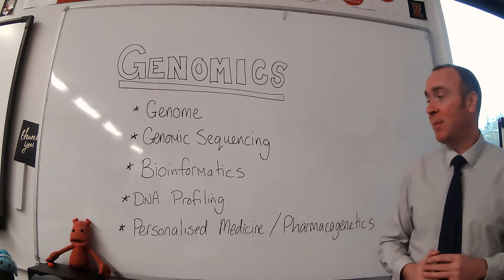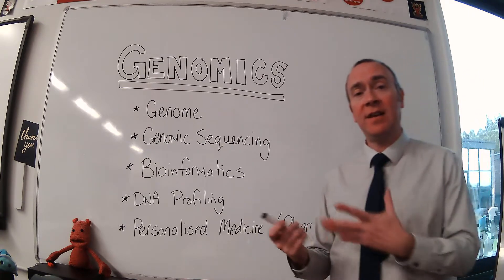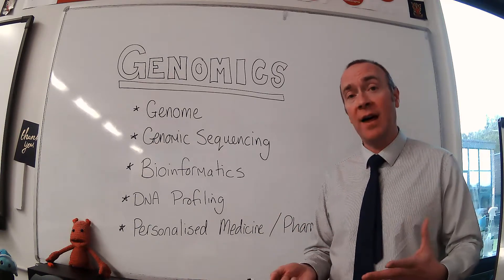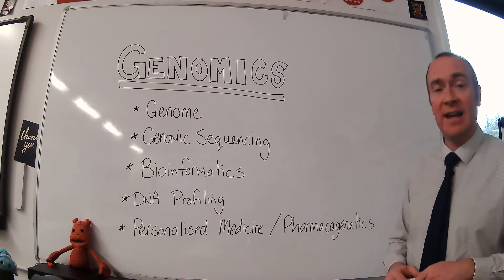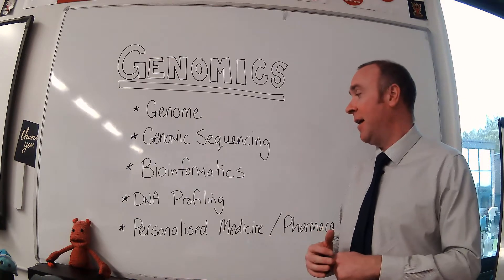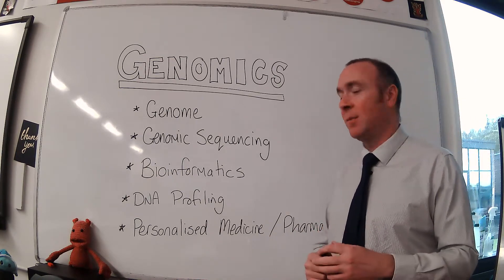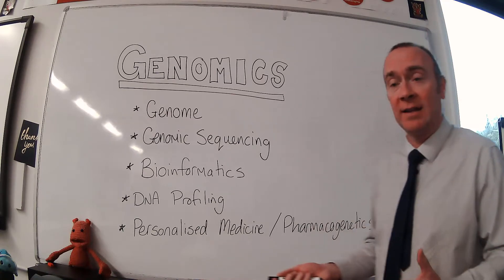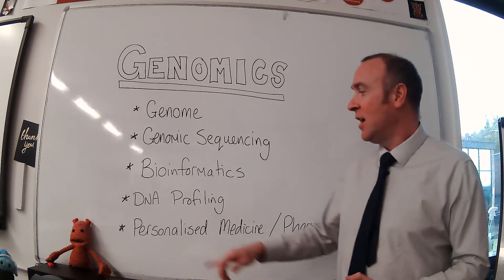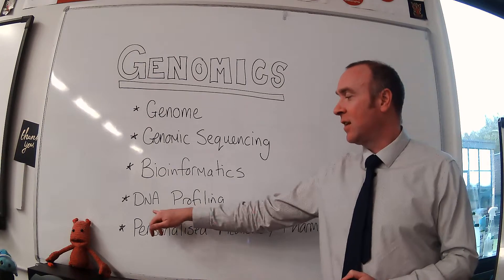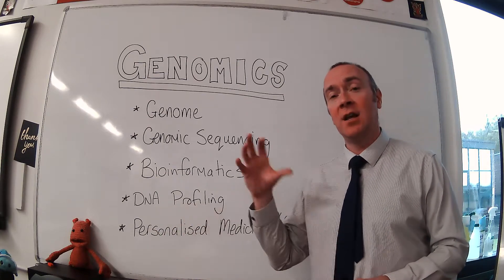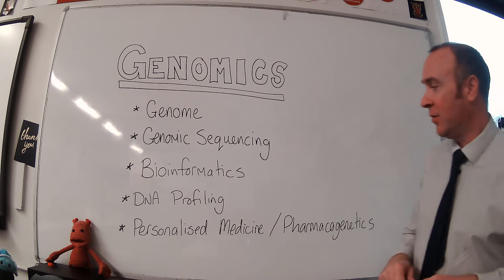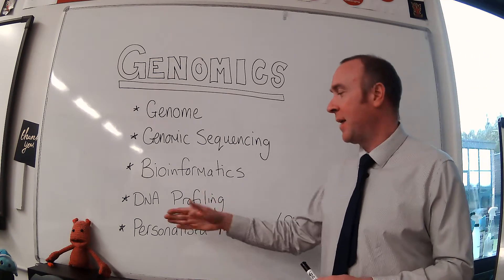We've talked about DNA profiling — somebody else having your genetic information and what people might do with that. For example, targeting adverts at you, or somebody being less likely to employ you if they know you're likely to catch a disease. So there are ethical issues with somebody else having that information about you, which is worth thinking about, albeit you probably won't be asked about it.